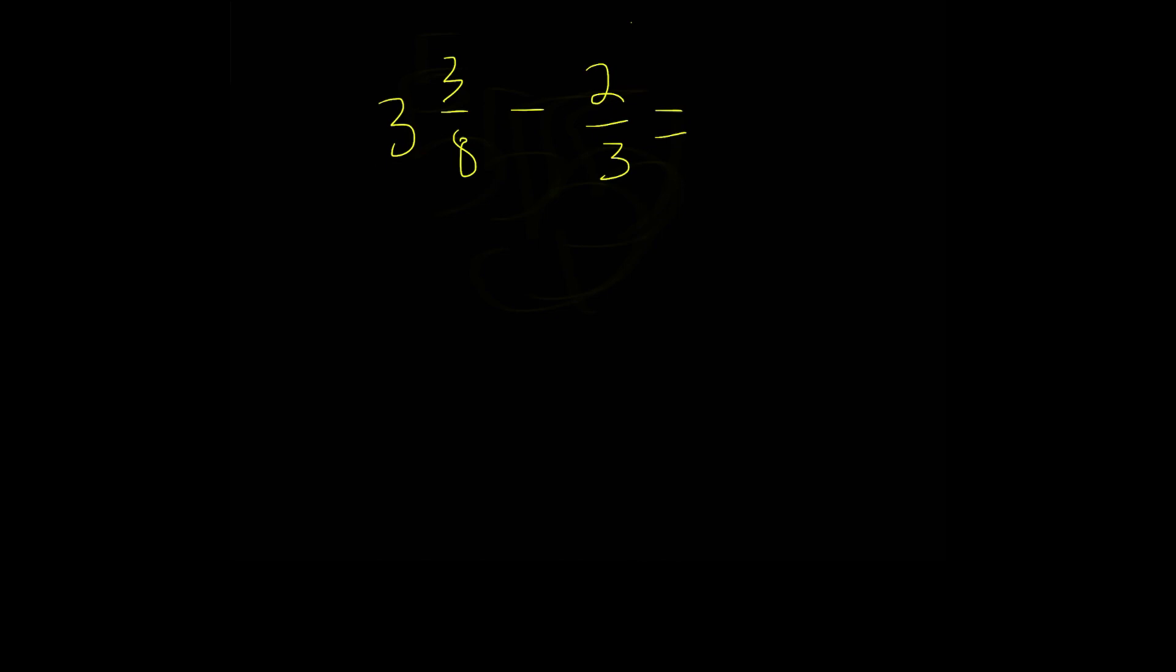And whenever we're dealing with mixed numbers, our first step is to always convert them into an improper fraction. So let's convert 3 and 3 eighths into an improper fraction.